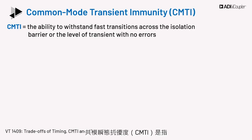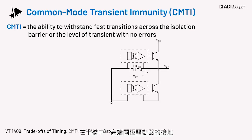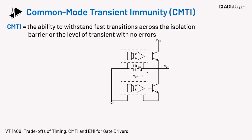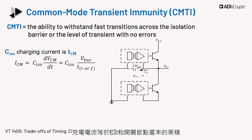Common mode transient immunity, CMTI, is the ability of an isolated gate driver to withstand fast transitions across the isolation barrier. It is the level of transients across the barrier with no errors in the system, and is given in units of kV per microsecond or volts per nanosecond. In half bridges, the ground of the high side gate driver moves in sync with the midpoint voltage of the half bridge. The converter switching action charges and discharges the parasitic capacitance, CISO, across the isolation barrier. CISO charging current is the common mode charging current defined as ICM.